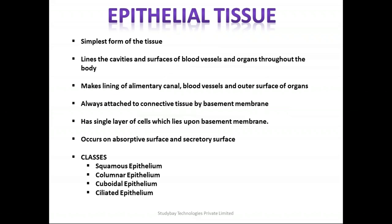The first one is epithelial tissue. This is the simplest form of tissue and it lines the cavities and surfaces of blood vessels and organs throughout the body. The basic lining of your organs and blood vessels is made up of epithelial tissue. It makes the lining of the alimentary canal, blood vessels, and the outer surface of organs. It is always attached to the connective tissue by the basement membrane and has a single layer of cells lying upon the basement membrane.